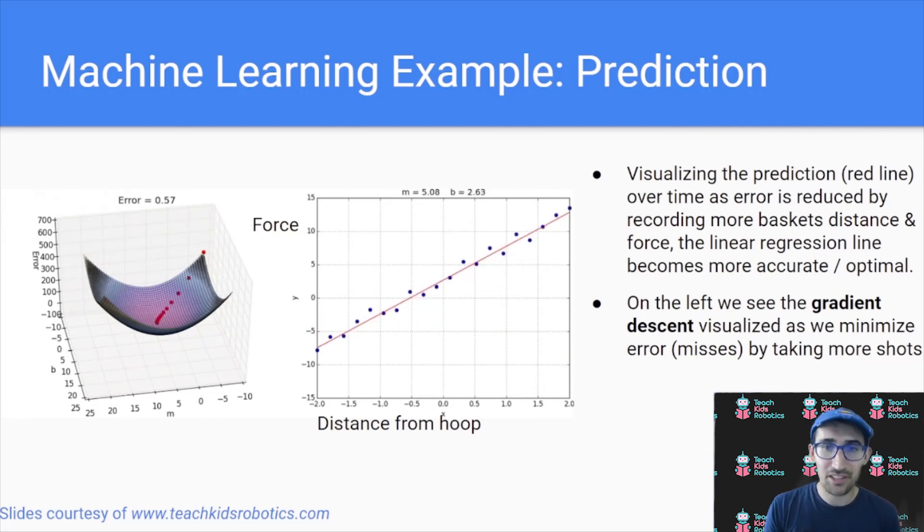This term, if you were to visualize it, is often referred to as something known as gradient descent, where effectively we're figuring out what that correct linear regression is. And in the process, we're minimizing the error. We're minimizing the number of missed baskets as we update and tune that linear regression with more data points on baskets that have gone in.